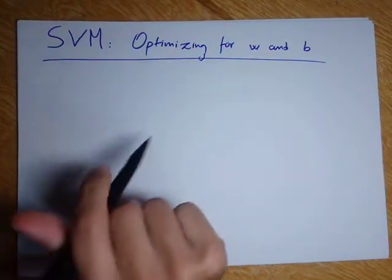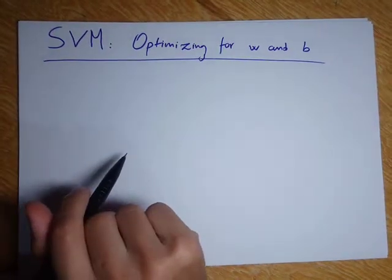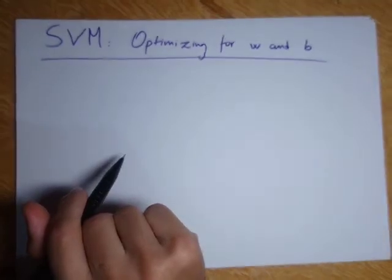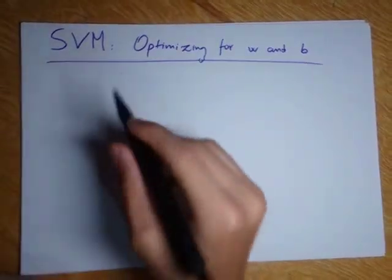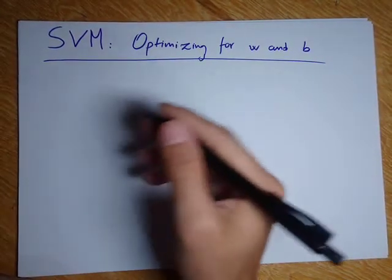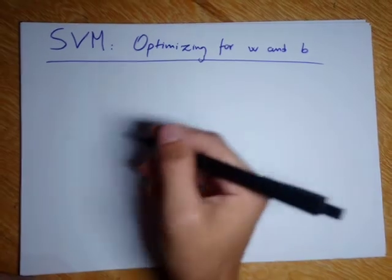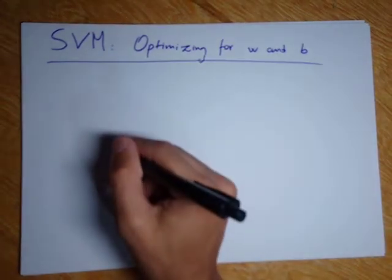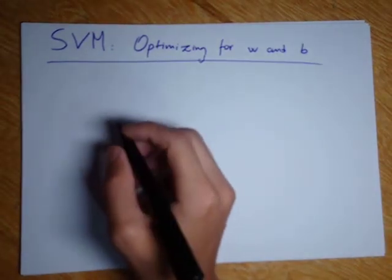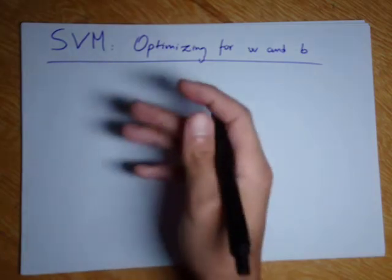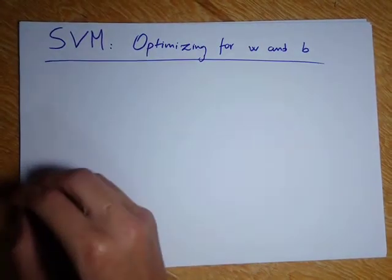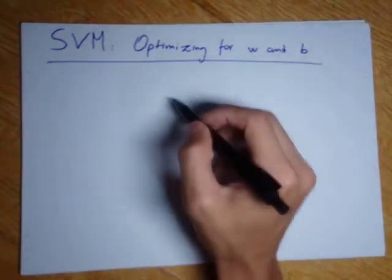Welcome back. In the previous three videos, I talked about how to solve the optimization problems in general using the Lagrangian. Now if you understood the content of those three videos, you will have no problem following what I'm going to do here to find W and B.